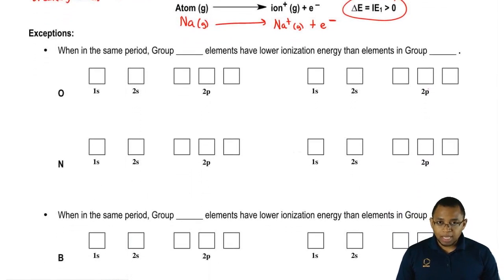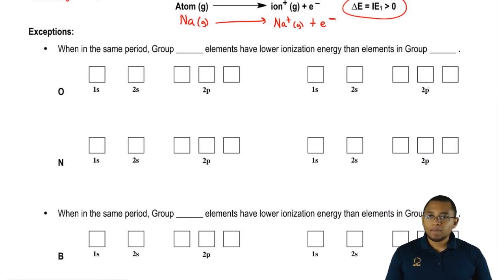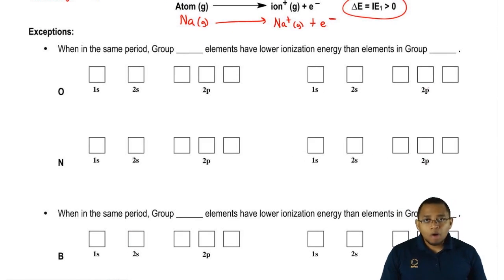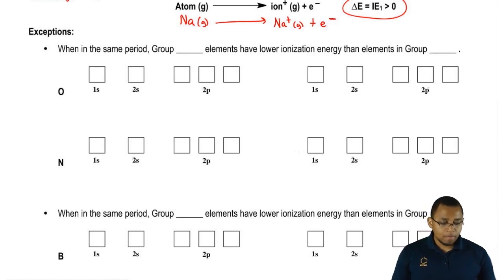Generally speaking, ionization energy increases going from left to right and decreases going down a group, but there are exceptions to this. There are two major exceptions you need to remember.